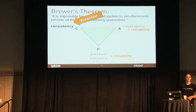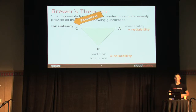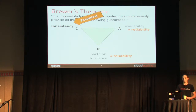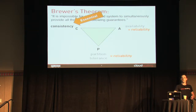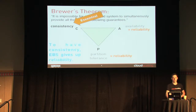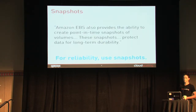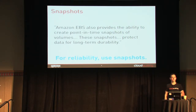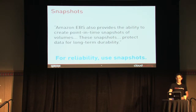Unless somebody disproves Brewer's theorem, you can kind of fake having these other things. You can get two of these three and kind of fake the third one, but you can't be guaranteed of the third one. So because EBS doesn't have reliability, users of EBS have to presume that it doesn't exist. People use snapshots — Amazon provides the ability to create snapshots against their EBS as a form of reliability, and the only way to get that reliability is to use them.